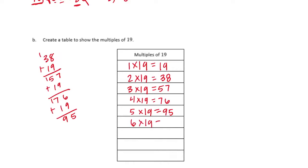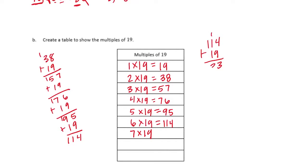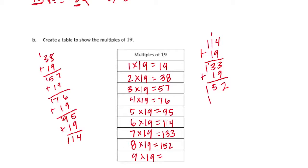6 times 19 is 114. 7 times 19 — let's do 114 plus 19, that's 133. 8 times 19 is 152. And 9 times 19 is 171.